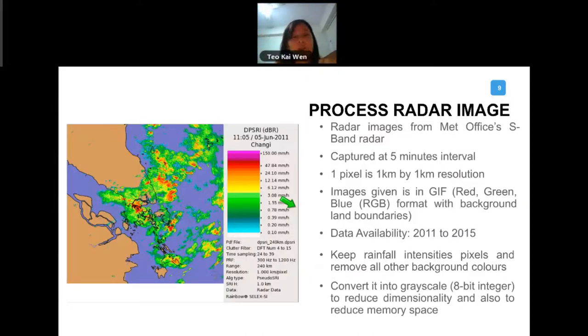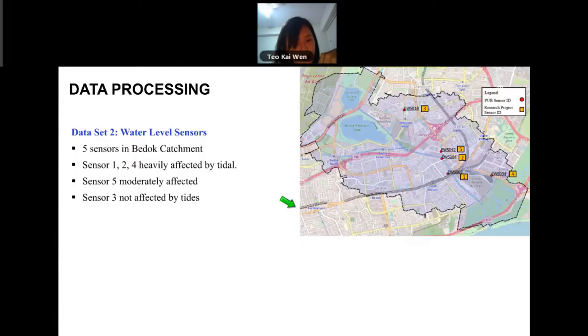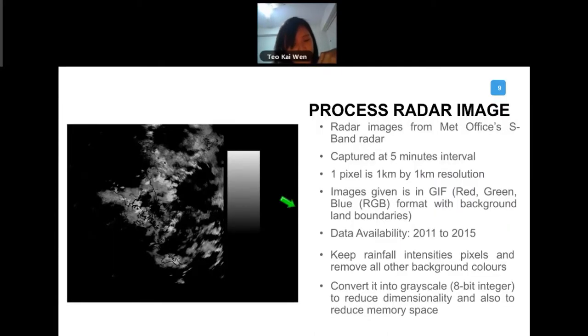What is interesting is we need to process radar images. This is not very common in hydrology and hydraulics. Radar images we got it from our Met Office, this S-Band weather radar, and it is captured at every five minutes. You can imagine it's very big files that we are handling. The radar images are of one pixel. One pixel of it is one kilometer by one kilometer in resolution and the radar images are in RGB format. The availability of the data is from 2011 to 2015, very big files that we have. What we wanted to do is to keep the rainfall intensities in the pixels. We want to remove all other background colors. This is not important to us, and we wanted to convert it to grayscale image. This is to reduce the memory space. We pick out what is relevant to us, and then from there we convert it to the grayscale image, something like that. And then we trim it.